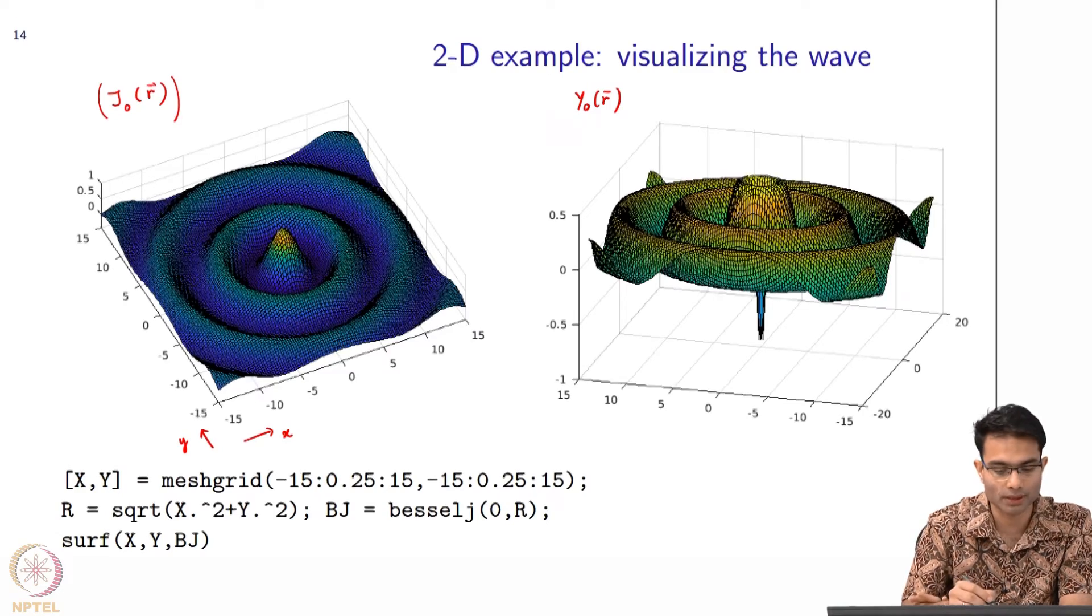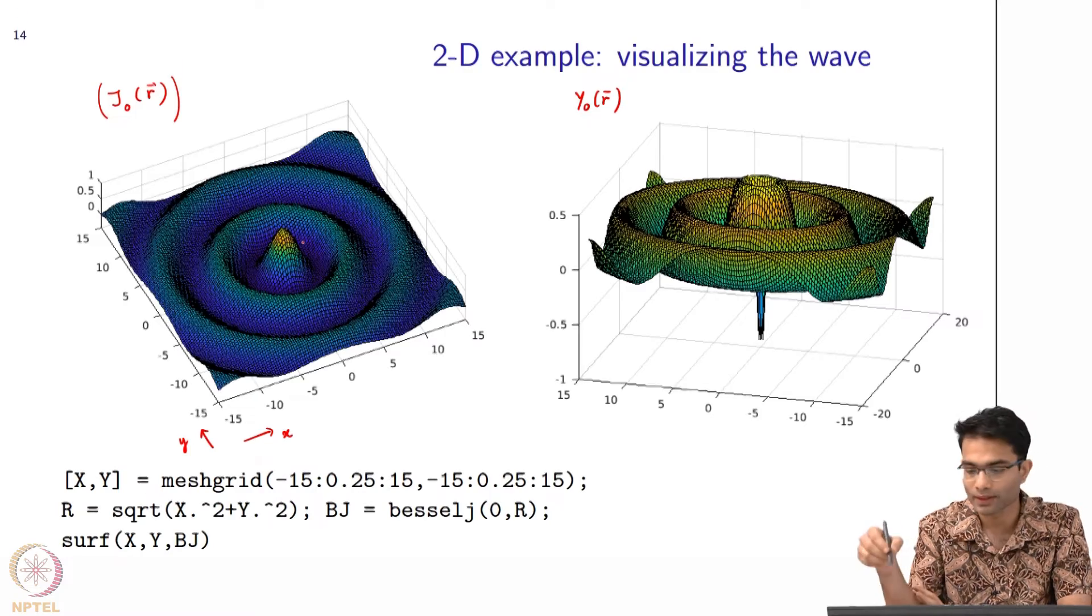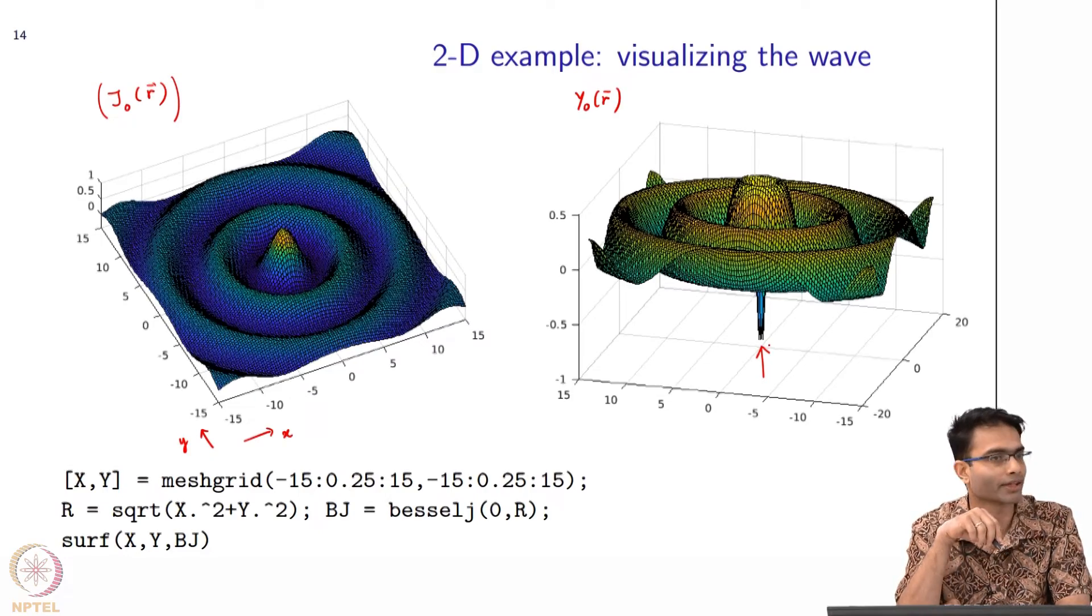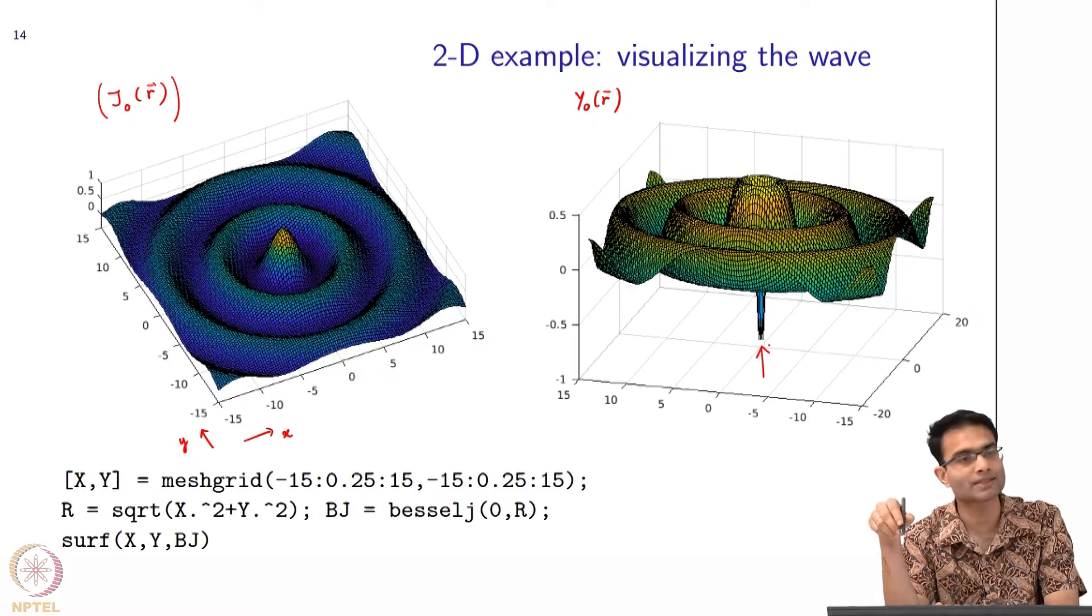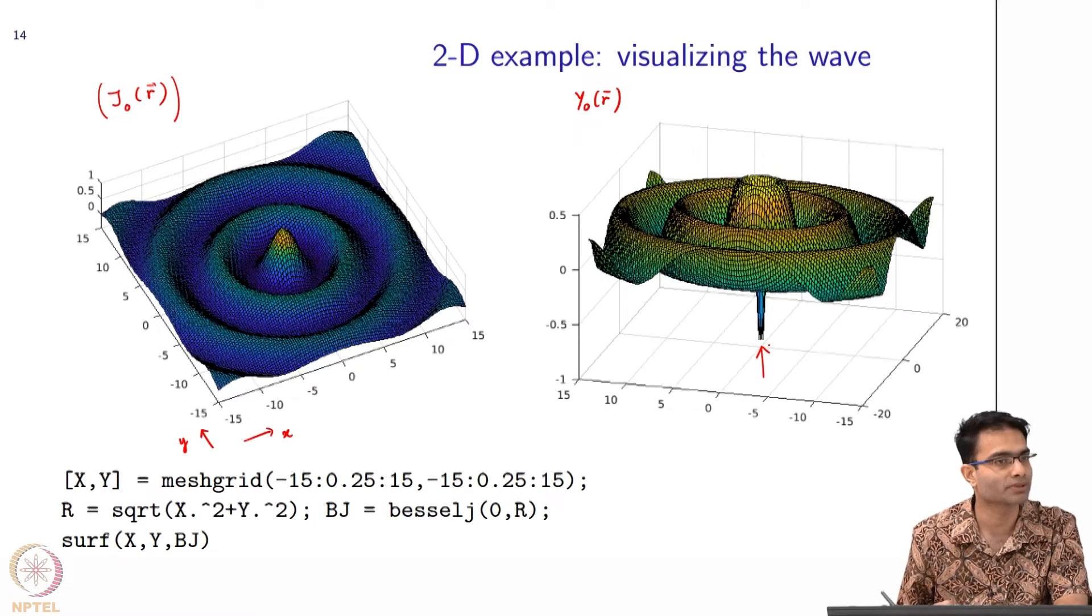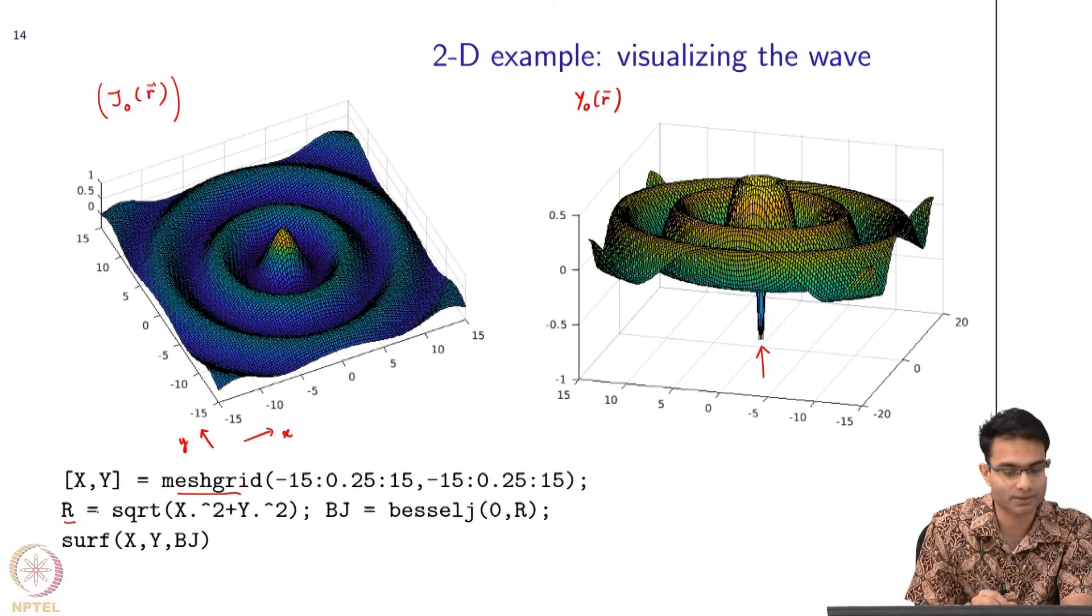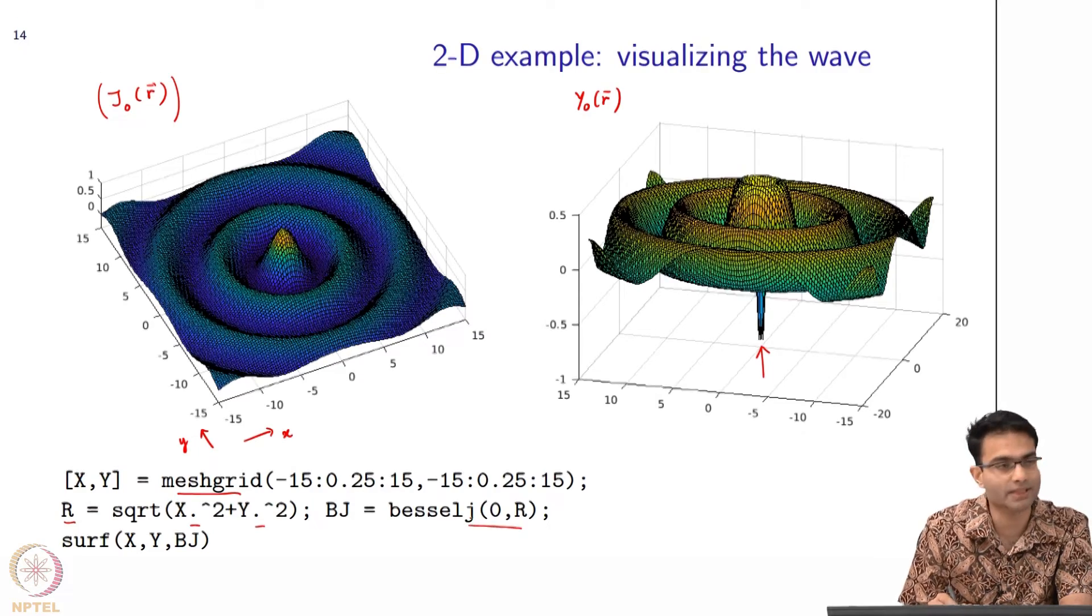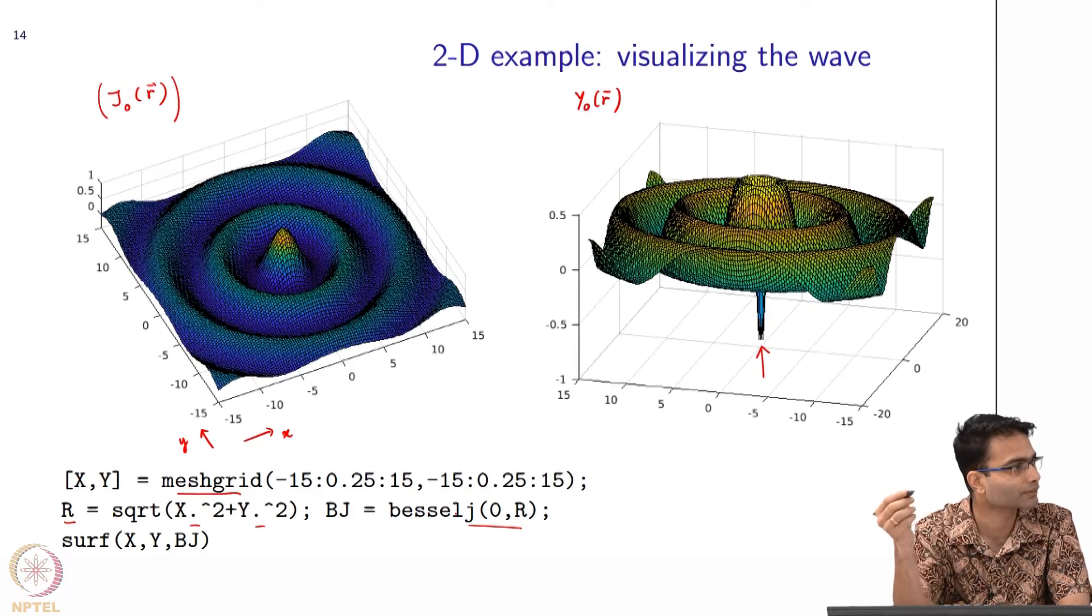J₀ is a real-valued function - it has a finite value everywhere. You can see the maxima of this function is happening at the origin - it's yellow-shaded here and begins to decay as you go away from it, just like a wave. For Y₀, what is the only difference? Notice it is plunging to minus infinity at the origin, and again it's like a wave, but decaying as you go away from it. In MATLAB it's very simple to generate this. You use the meshgrid command to generate a grid of x-y points, evaluate the radial distance - this is element-wise operation - and find your Bessel J. They have besselj, bessely, and so on - that's how you generate these. The surface plot is what you use to plot this 3D function.